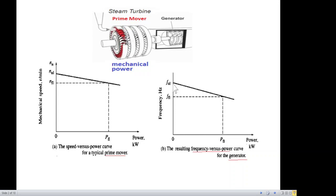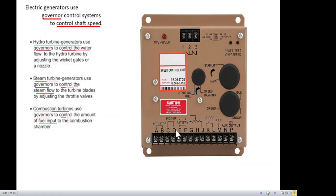As the load increases, the frequency will also decrease from no-load to a full-load value. We must keep in mind that a governor is attached with every generator, and it has various parameters to control — mainly the speed or frequency, which is called the set point of the generator. In a hydro turbine, the governor controls the flow of water; in a steam turbine, it controls the steam flow; and in a combustion engine, it controls the fuel flow to decrease or increase the shaft speed and consequently the generator frequency.